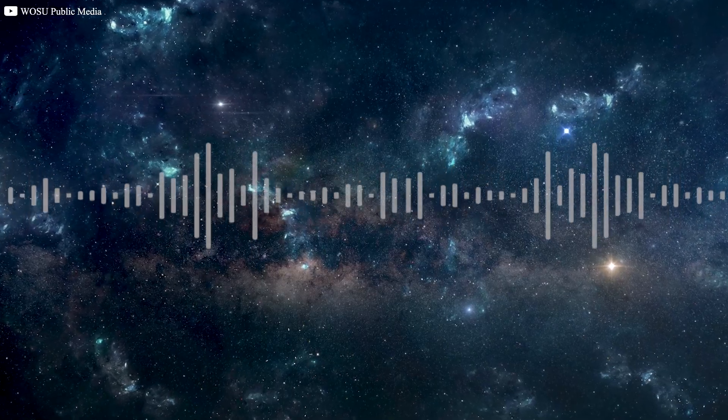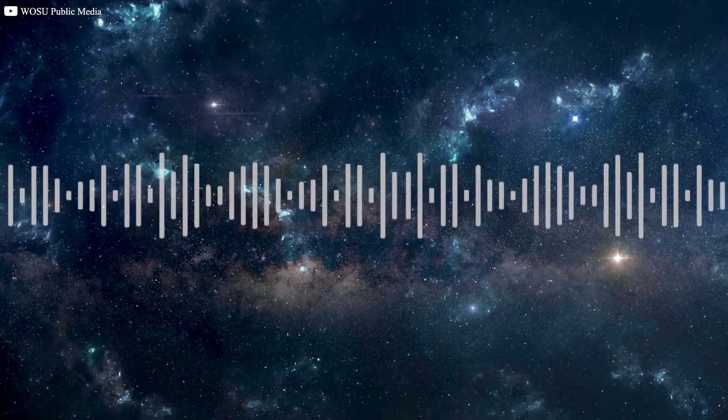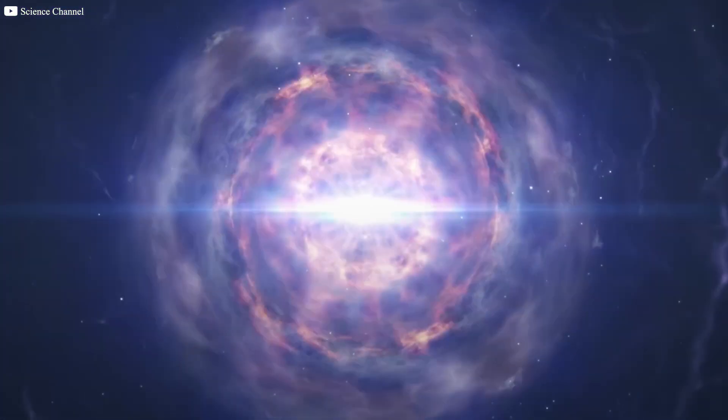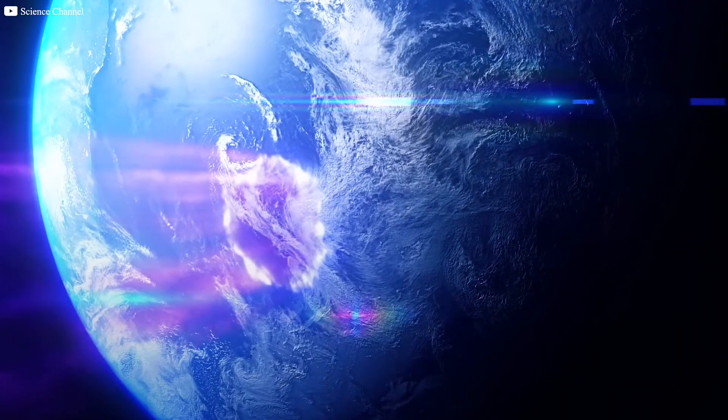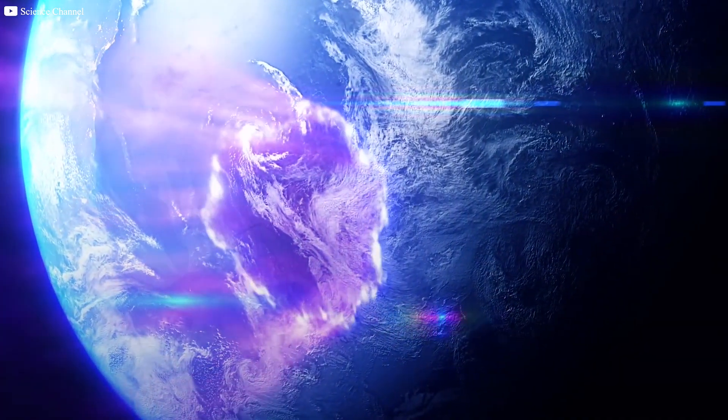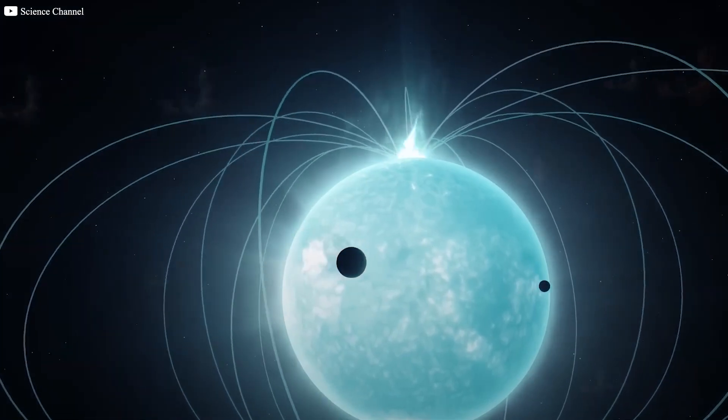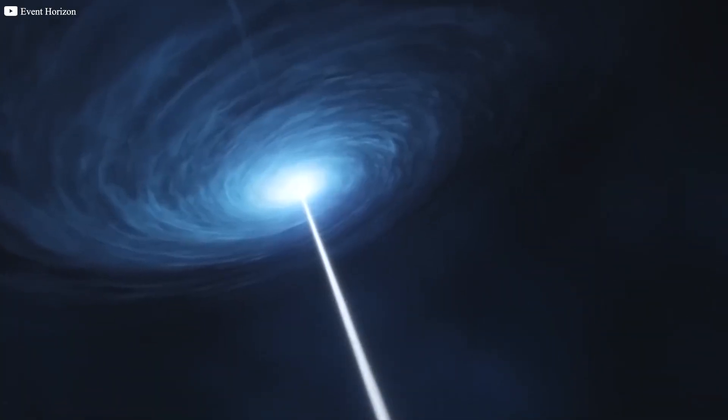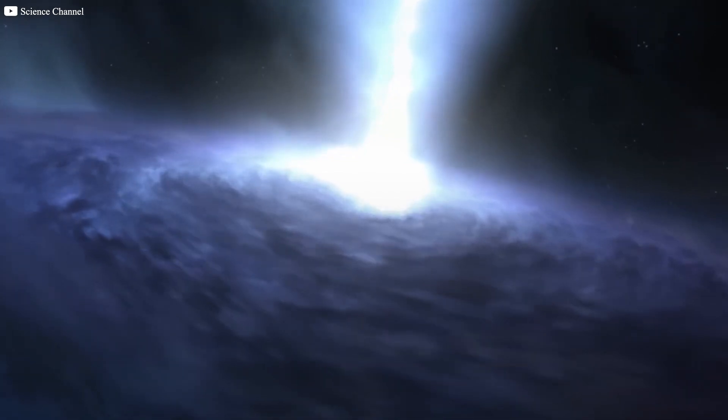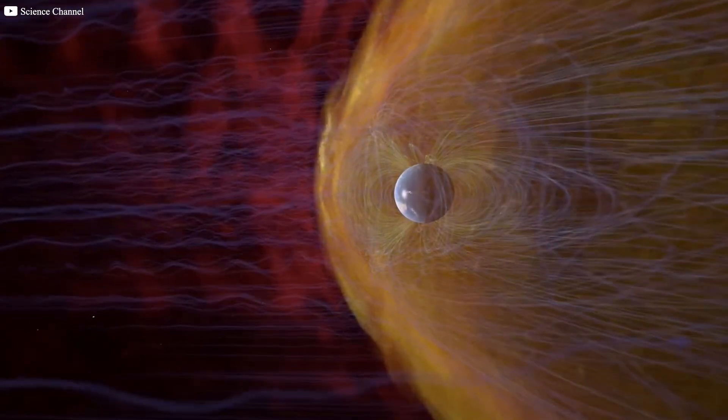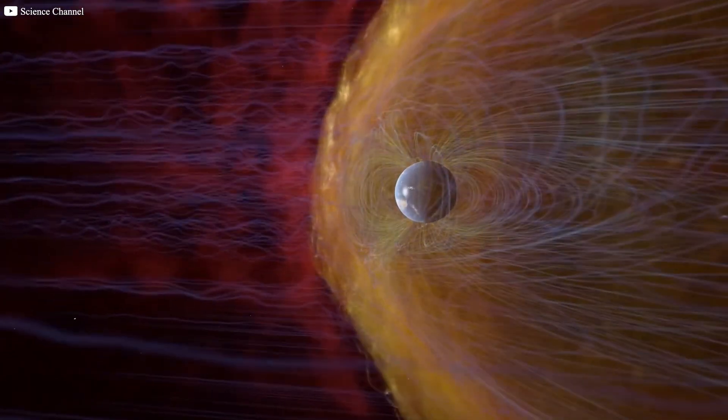Third, the intensity of the wow signal, 30 times stronger than the background noise, also matches what we would expect from a magnetar flare interacting with a dense hydrogen cloud. Magnetars are known to emit extremely powerful bursts of energy, which could easily generate a signal of this magnitude. Finally, the signal's brief duration, 72 seconds, fits with the behavior of a magnetar flare. These flares are short-lived, and once the flare dissipates, the hydrogen cloud will no longer produce the intense signal.